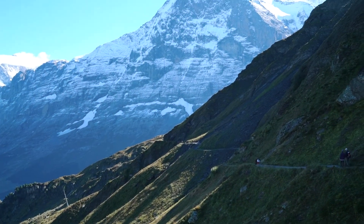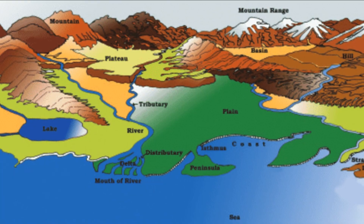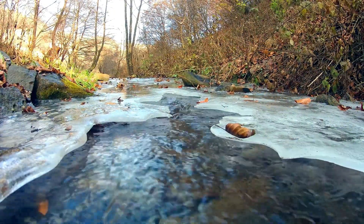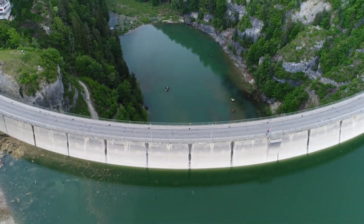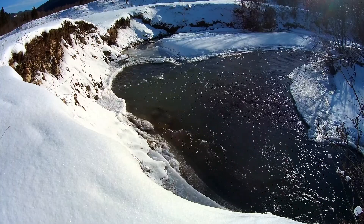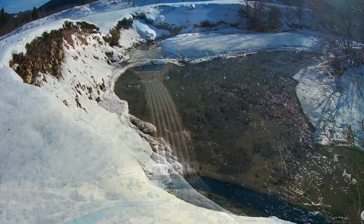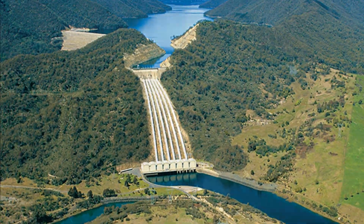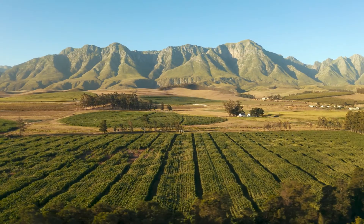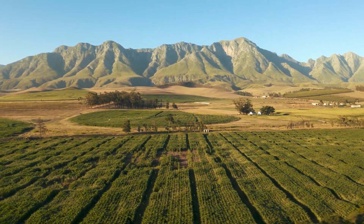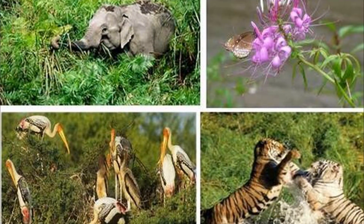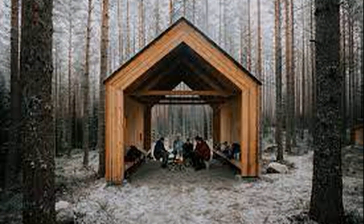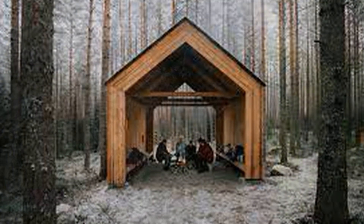Mountains are very useful. The mountains are a storehouse of water. Many rivers have their source in the glaciers in the mountains. Reservoirs are made and the water is harnessed for the use of people. Water from the mountains is also used for irrigation and generation of hydroelectricity. The river valleys and terraces are ideal for cultivation of crops. Mountains have a very rich variety of flora and fauna. The forests provide fuel, fodder, shelter and other products like gum and raisins.